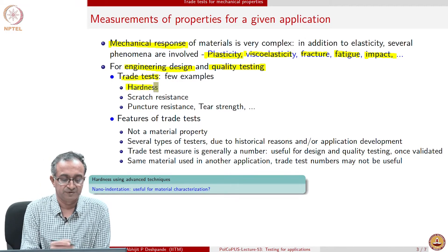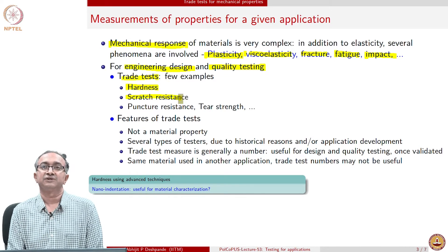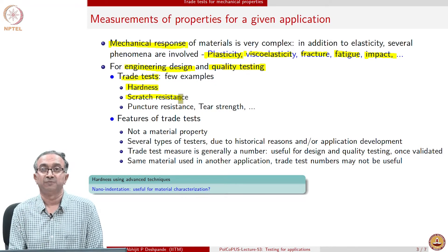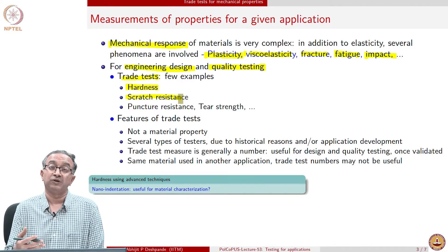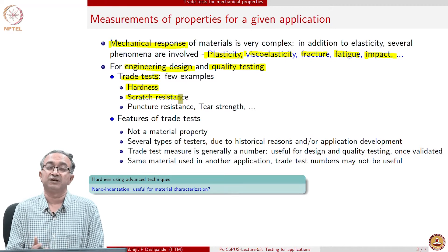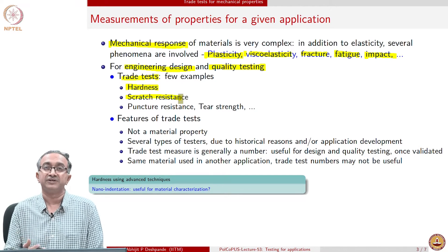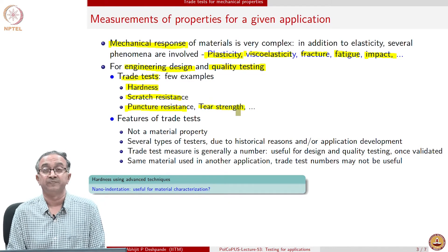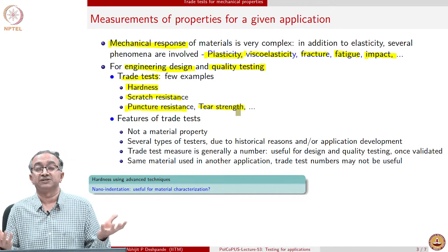Some examples of trade tests are hardness or scratch resistance. Clearly how a material scratches is related to mechanical properties, because a scratch is essentially a crack in the material, but only a surface phenomenon. How secondary or primary interactions, or the microstructure of a polymer, influence scratch resistance is a fundamental question. But in terms of evaluating whether a material may be suitable, we can develop a trade test and measure scratch resistance. Similarly, for films or sheets, we can look at tearing strength or puncture behavior — how does it puncture when pressurized.